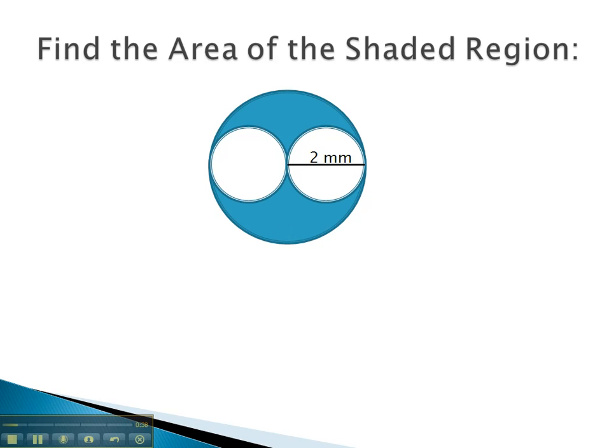Well, we notice we have three circles. First, we've got a big circle. For the area of the big circle, we take pi times the radius squared.